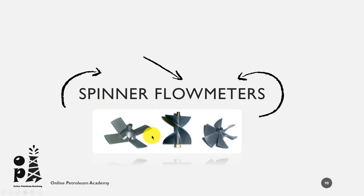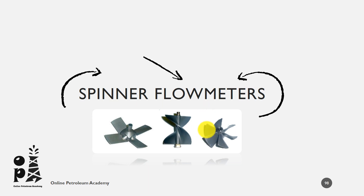The spinner in the middle and on the right are called helical and turbine respectively. These designs are much more efficient than the blades. However, in practice, these are much smaller than blade spinners, which reduces the torque applied by the fluid on them.